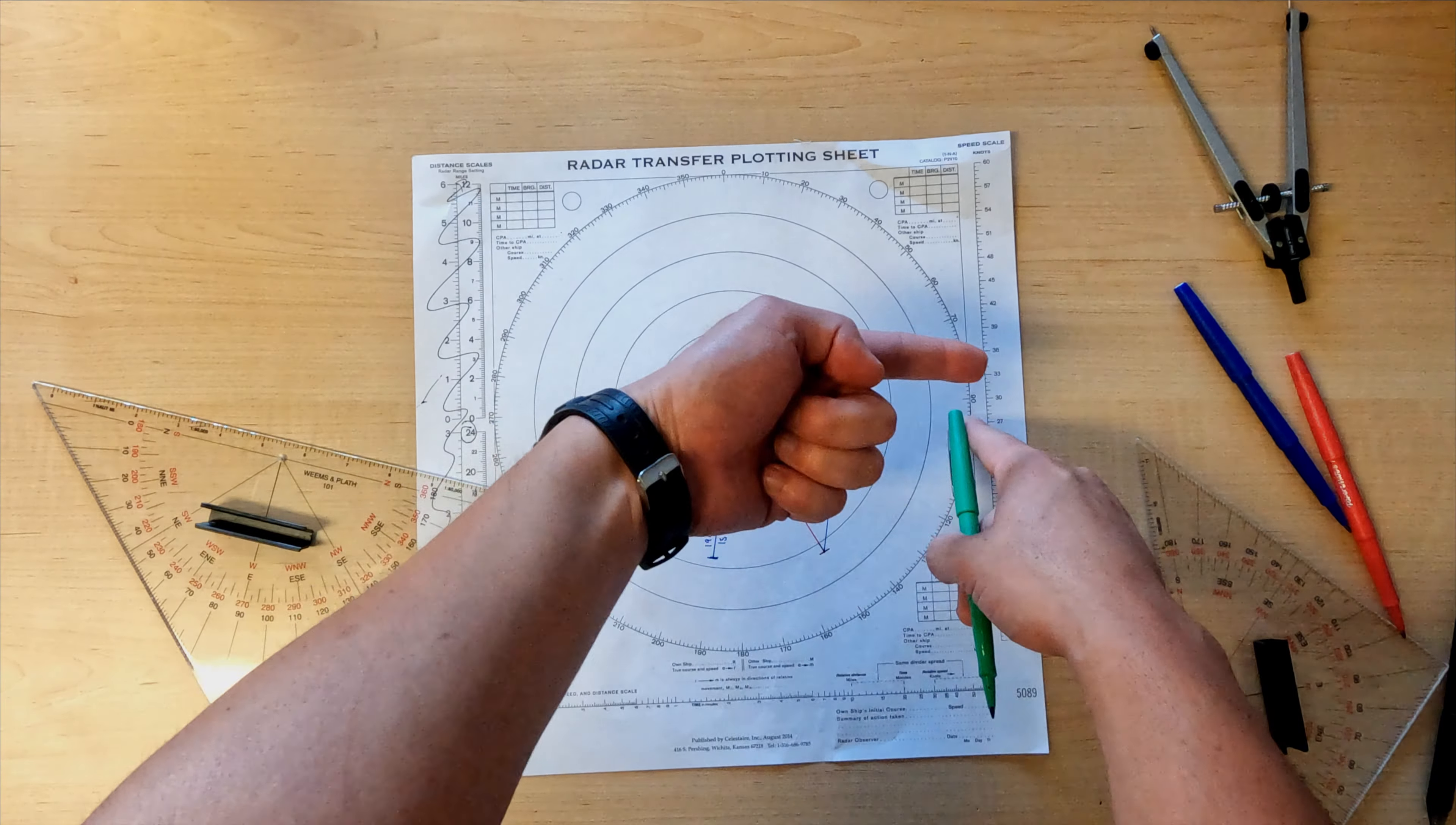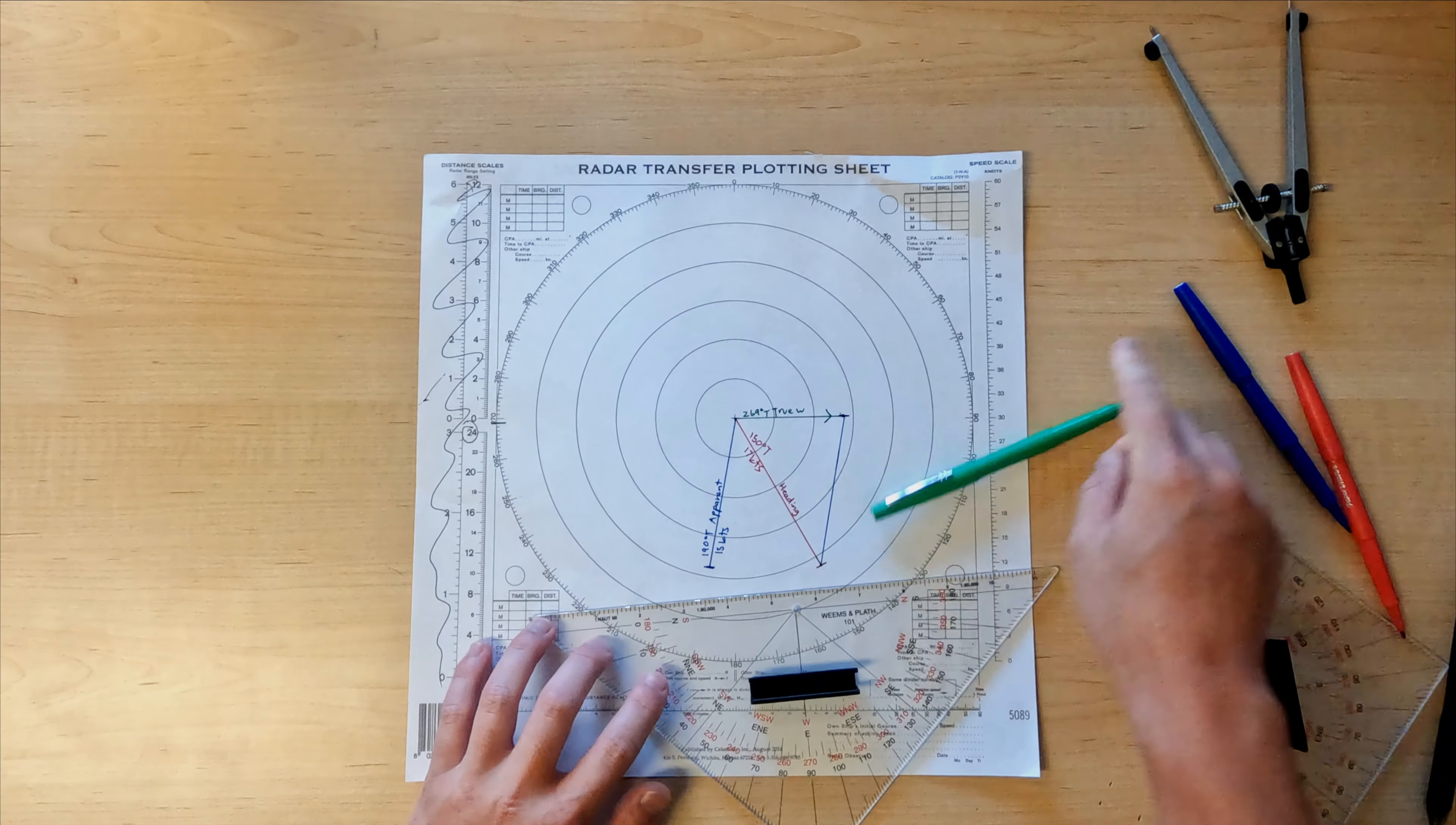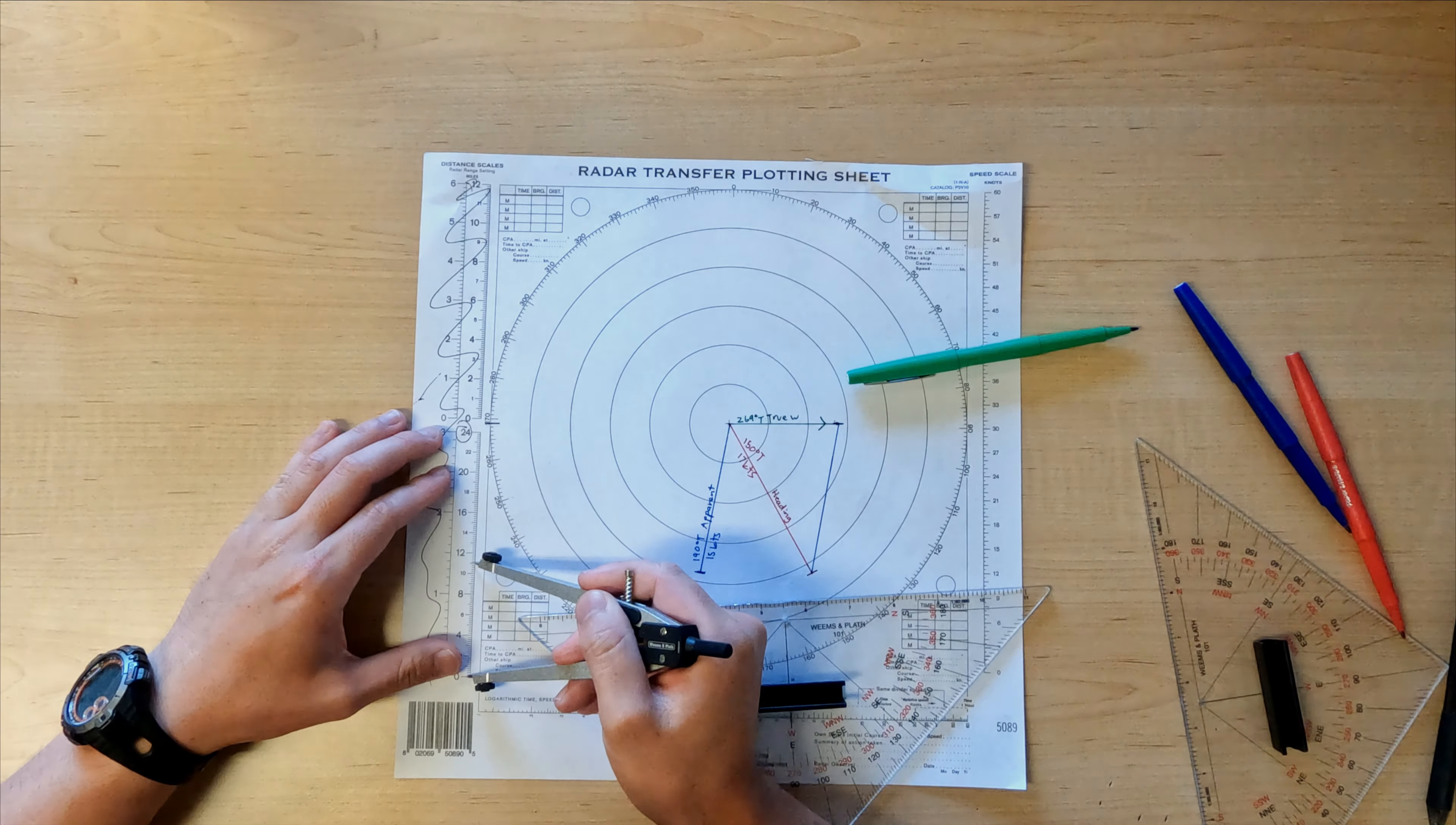So for the number two, we're going to do your ship's course is at 150 degrees true at 17 knots. The apparent wind is 40 degrees off the starboard bow at 15 knots. So let's start with what we know. We have the course is 150 at 17 knots. So we're going to measure out 17, and first we're going to...